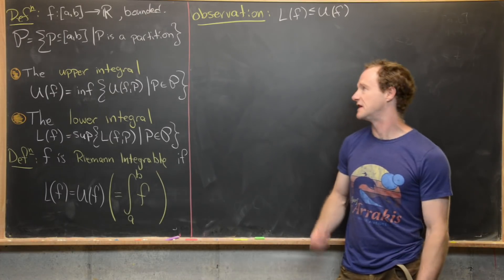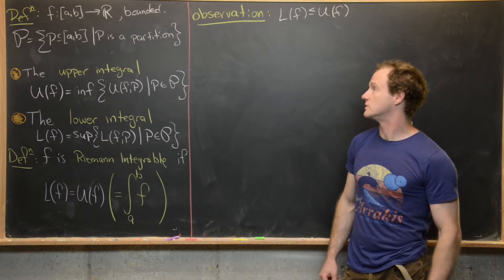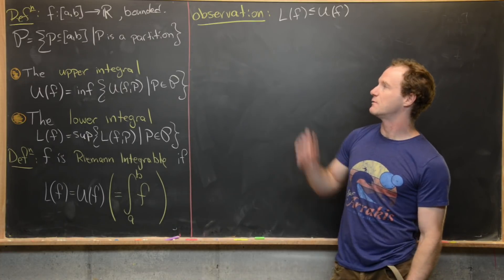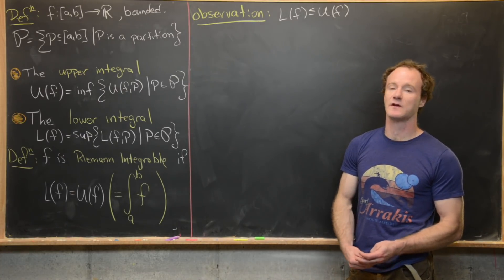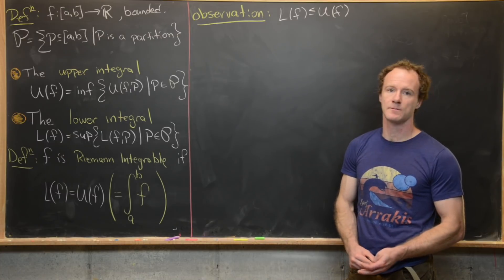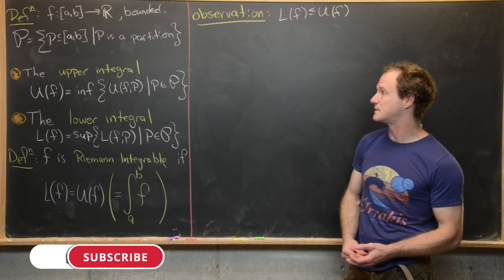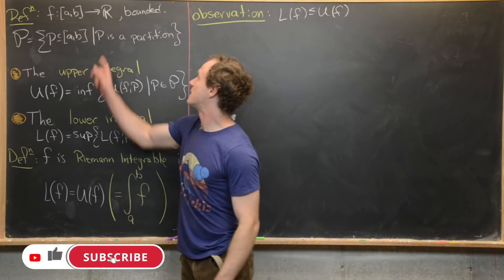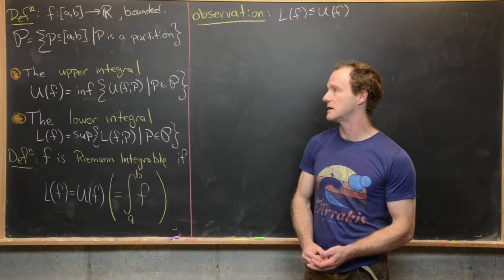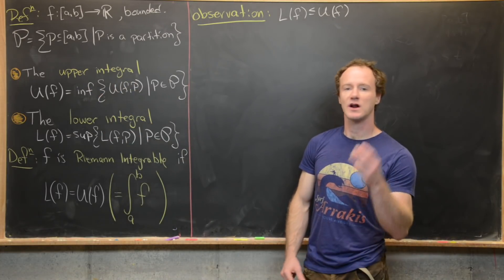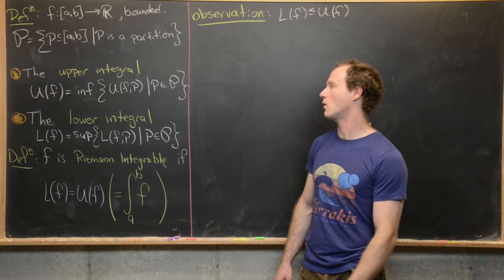Now we're finally ready to look at the definition of integrability. So let's say we've got a bounded function f from an interval [a,b] to ℝ, and then we set script P equal to the set of all partitions of [a,b]. Then we're going to define two things: the upper integral and the lower integral.